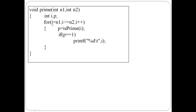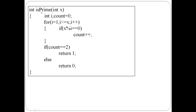The function uses a loop where i starts at n1 and goes up one by one. Each number i is passed to the is_prime function. The is_prime function receives one integer number and returns 1 if prime and 0 otherwise. Return type is int and the received number is x.